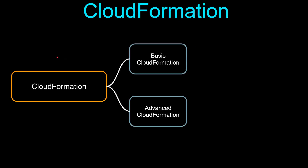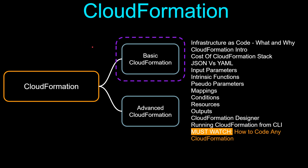Under CloudFormation, this is divided into two chapters: basic CloudFormation and advanced CloudFormation. Under basic CloudFormation, we're going to start with infrastructure as code — what it is and why it's needed — then what is CloudFormation, the cost of CloudFormation, JSON versus YAML, and then CloudFormation concepts like input parameters, intrinsic functions, pseudo parameters, mappings, conditions, resources, outputs, CloudFormation designer, and running CloudFormation from CLI.